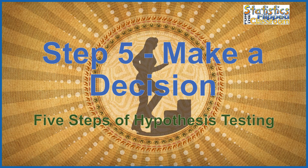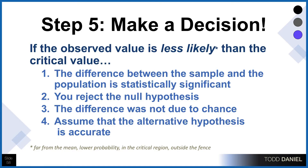Now it's time for step five. We look at the findings and we make a decision. Ultimately we're going to write up our decision in APA style. If the observed value — let's say for our t-test — is less likely than the critical value, then the difference between the sample and the population is statistically significant. That means that you reject the null hypothesis. The difference between the sample and population means was not due to chance.